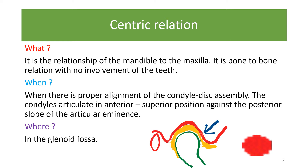The posterior slope of what? Of the articular eminence. So the condyle is positioned superiorly and anteriorly against the posterior slope of the articular eminence. In this position, the condyle is in contact with the thin avascular portion of the articular disc. This avascular portion is without nerves. In this assembly, the condyles are aligned such that compressive forces are very well tolerated — there is no sign of pain or discomfort. This is all happening in the glenoid fossa.